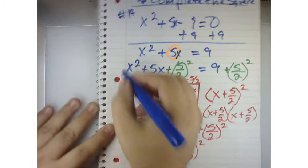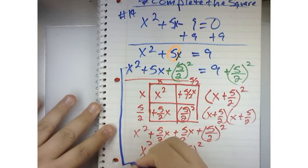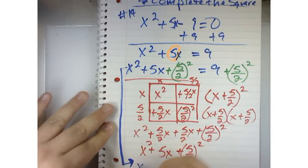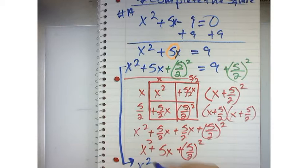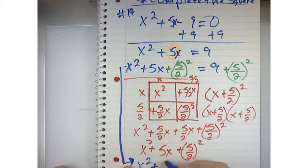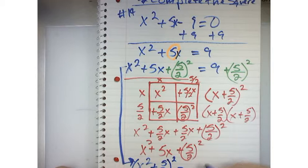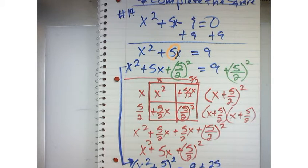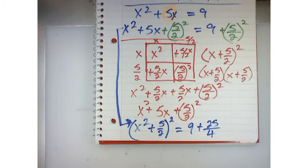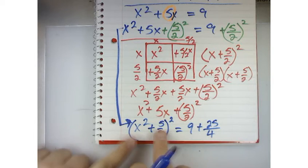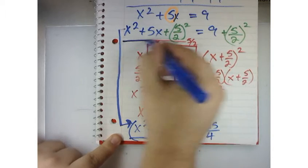So, what I've done is I'm able to go from this step and say x plus 5 over 2 squared equals 9 plus 25 over 4. Because this line right here is the same as all the stuff here.